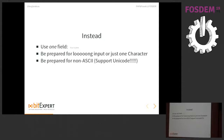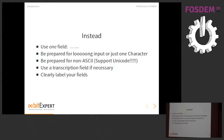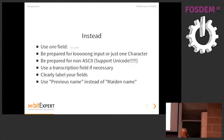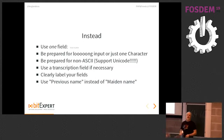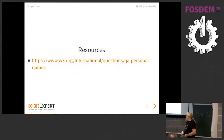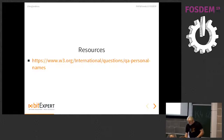There might also be non-ASCII input — whether that's German umlauts, French accents, or Chinese names like Mao Zedong. If you have Chinese names you might want to use a transcription field if you need to know how the name is pronounced. Also, clearly label your fields — use something like 'previous name' instead of 'maiden name,' because it's not only women who change their name. The W3C thought about all this, and that's where I took this material from.